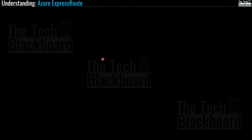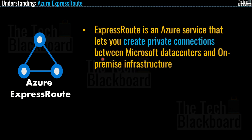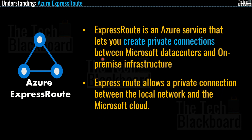Now let's shift our focus from Azure DNS to Azure ExpressRoute. Azure ExpressRoute is a service that lets you create private connections between Microsoft data centers and infrastructure that's on-premises or in co-location facilities. ExpressRoute connections do not go over the public internet, and that's why they offer high security, reliability, and speeds with lower latencies than typical internet connections. ExpressRoute allows a private connection between the local network and the Microsoft cloud, and organizations can use it to connect to services such as Microsoft Dynamics 365, Microsoft Azure, and Office 365.